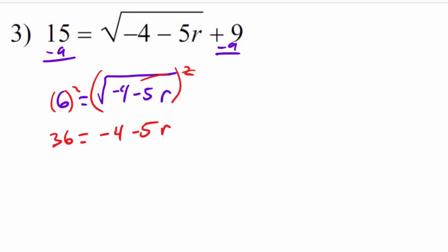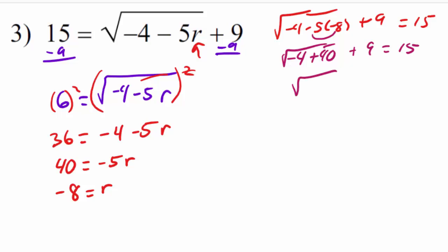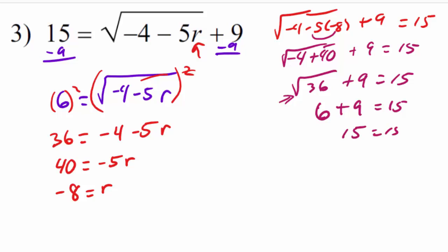I add 4 to both sides, giving 40 equals negative 5r. Dividing by negative 5 on both sides, r appears to equal negative 8. Substituting negative 8 back in: square root of (negative 4 minus 5 times negative 8) plus 9 should equal 15. Negative 5 times negative 8 is positive 40, so under the radical I get negative 4 plus 40 equals 36. Square root of 36 is 6, plus 9 equals 15. It checks out.